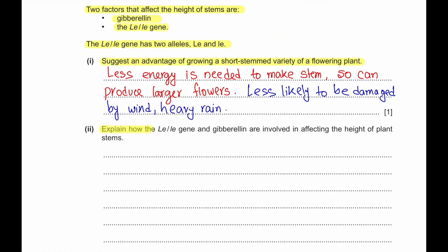Explain how the Le gene and gibberellin are involved in affecting the height of plant stems. Short plants are homozygous small le le. Recessive alleles code for non-functional enzyme. Non-functional enzyme gives inactive gibberellin. The DELLA proteins are not broken down, so the DELLA protein stays bound to the PIF, which is a transcription factor. The PIF cannot bind to the promoter of the gene that promotes growth.